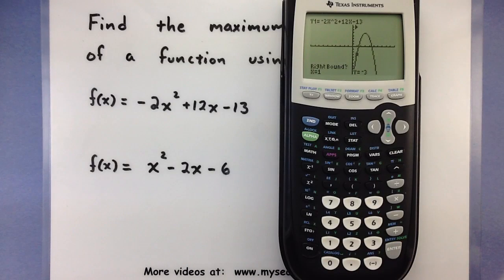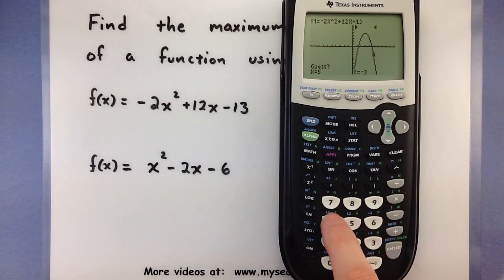For the right bound I want to choose a number larger than 3, so let's say 5. And now we get to make a guess in between those two, so somewhere between 5 and 3, it's about 4.